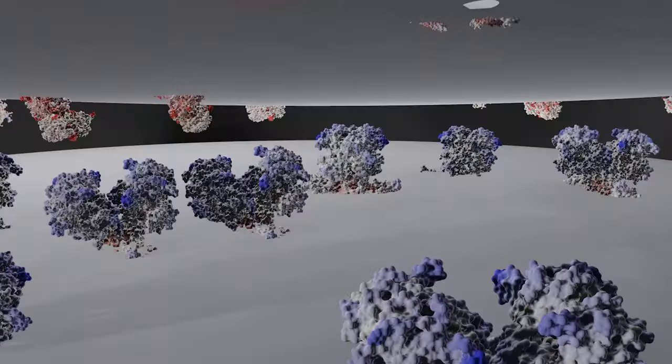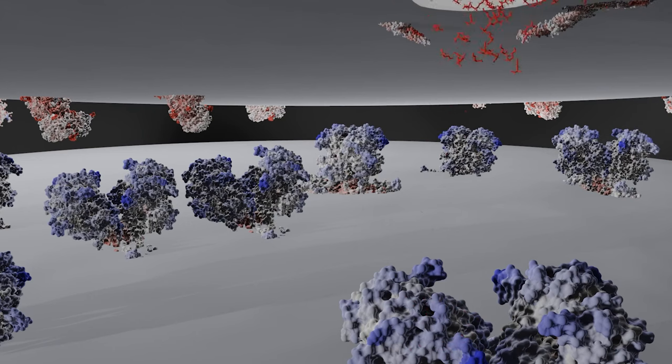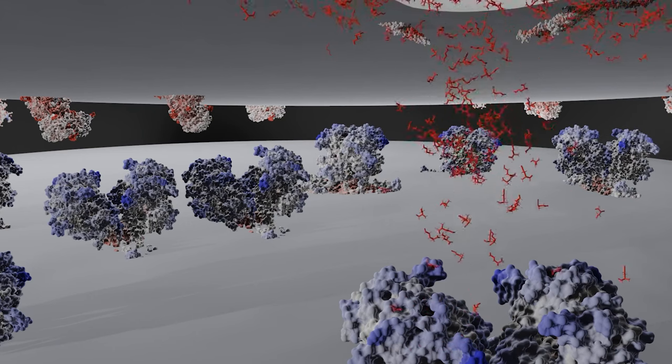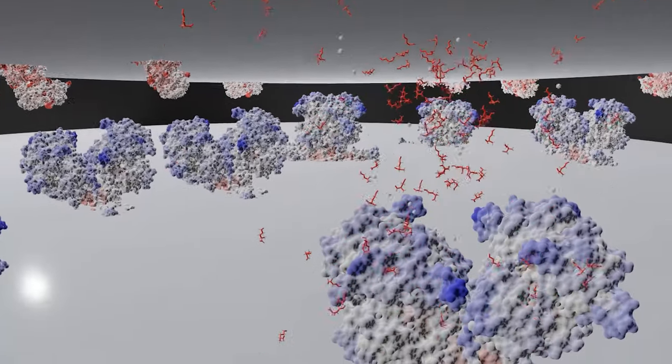When a neuron fires an action potential, glutamate is released and opens receptors to let ions flow in. This induces the synaptic potential that we record.